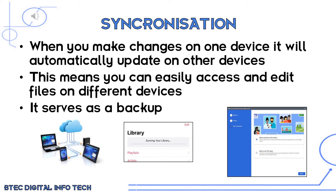Another feature of cloud storage is synchronization. This is essentially a fancy term for backing up your data onto the cloud, but what synchronization does is update across all of your other devices, meaning you can access files on any device you use. In the picture in the bottom left you can see the cloud with four different devices connected. For example, if you download a new song on iTunes, that will then update onto all devices that you use iTunes on.